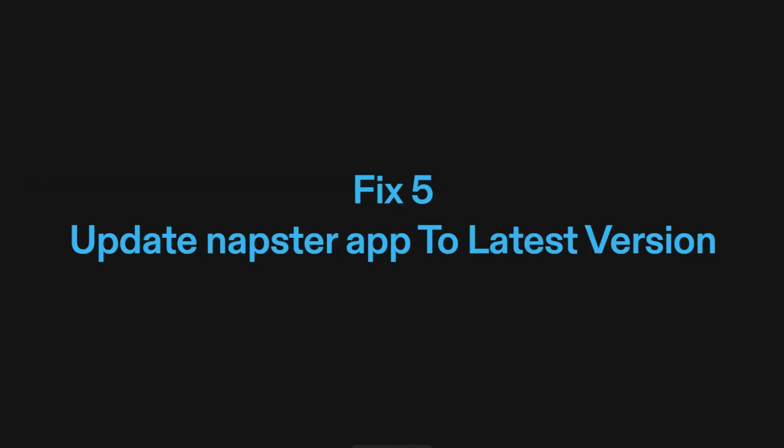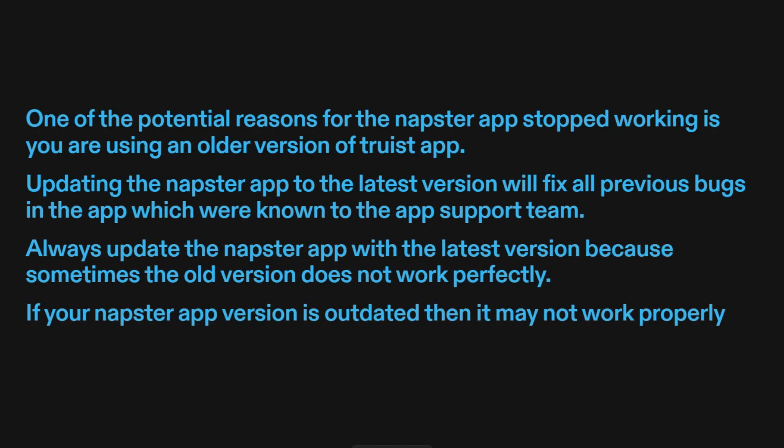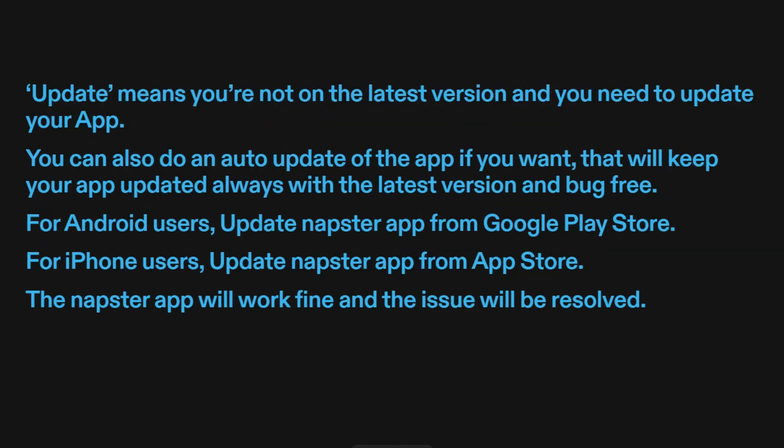Fix 5: Update the Napster app to the latest version. One of the potential reasons for the Napster app stopping work is using an older version of the app. Updating the Napster app to the latest version will fix all previous bugs that were known to the app support team. Always update to the latest version because sometimes the old version does not work perfectly. If your Napster app version is outdated, it may not work properly. You can also enable auto-update to keep your app always updated and bug-free.